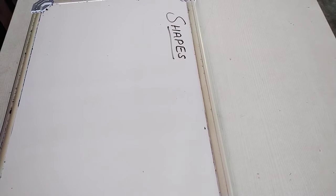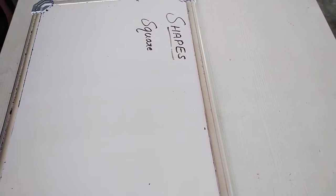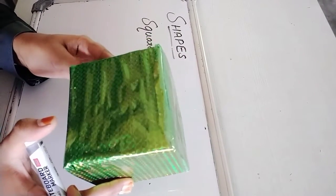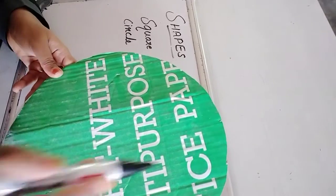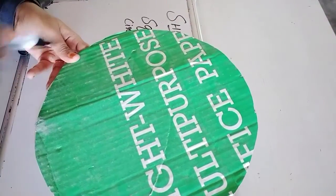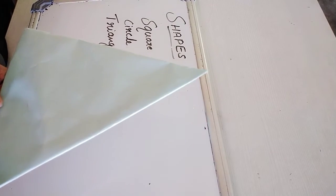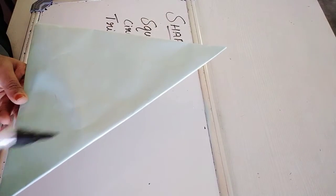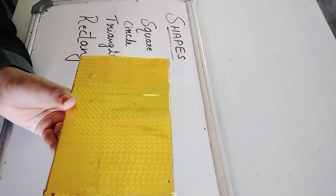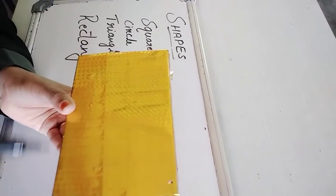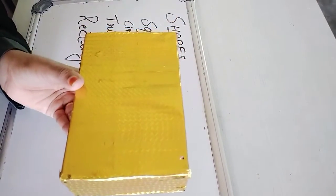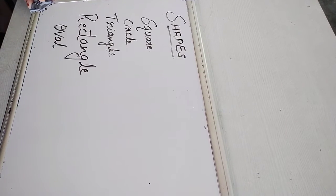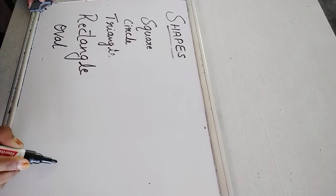Shapes. Now I am going to show you some shapes. Square — square shape. And the second one is circle. Third one is triangle. And the last one is rectangle. So square, circle, triangle, rectangle. And the next one is oval shape.